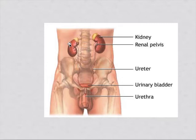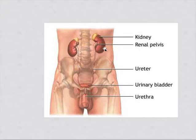We know the blood supply to the kidneys comes from the renal arteries, which arise from the aorta. In medicine you may have studied renal artery stenosis. The renal veins drain into the inferior vena cava. Above the kidneys are the adrenal glands, which produce epinephrine, glucocorticoids, and mineralocorticoids.